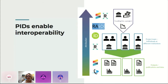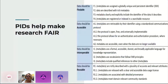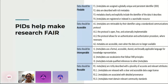PIDs also help make research FAIR — Findable, Accessible, Interoperable, and Reusable. This set of principles was published in Nature in 2016, and you can find the FAIR data principles on the FORCE11 website. PIDs have a starring role in the FAIR principles: if you want data to be accessible, it needs to be retrievable by its identifier using a standardized communications protocol. Metadata should clearly and explicitly include the identifier of the data it describes. PIDs feature very strongly in helping make research data FAIR.